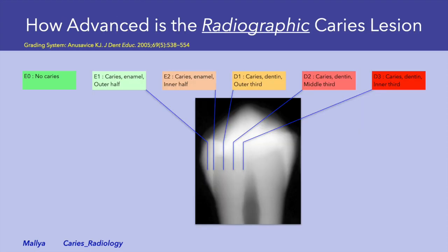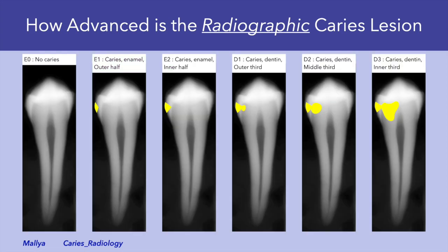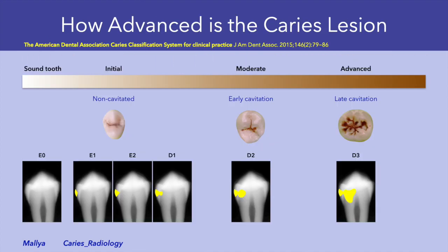There are established schemes to score caries lesions on radiographs. E1 and E2 refer to caries in the outer and inner halves of enamel respectively. When caries extends into the dentin, it's scored as D1, D2, and D3 depending on whether it involves the outer, middle, or inner third of dentin. Our task is not simply to detect the presence of a caries lesion, but also to assess the depth of its extension. Imaging may provide initial detection of a caries lesion not clinically apparent, or provide information on lesion depth and extent, both important in management of caries.